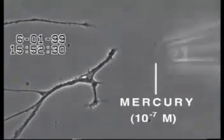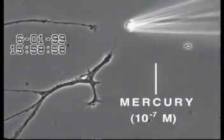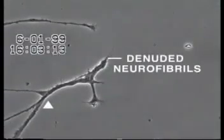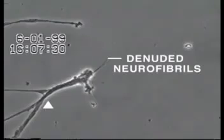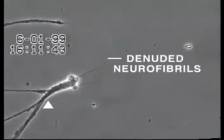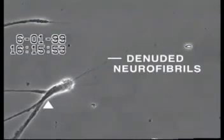Over the next 30 minutes, the neurite membrane underwent rapid degeneration, leaving behind the denuded neurofibrils seen here. In contrast, other heavy metals added at this same concentration, such as aluminum, lead, cadmium and manganese, did not produce this effect.